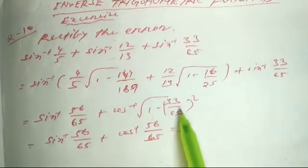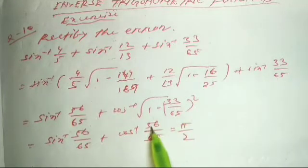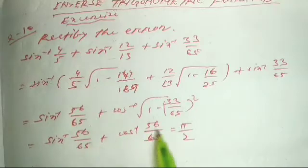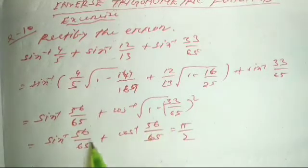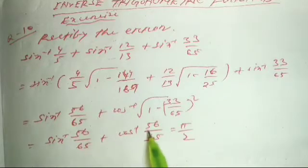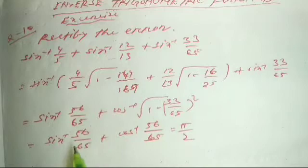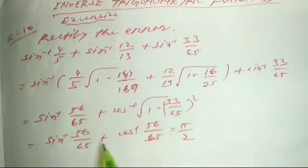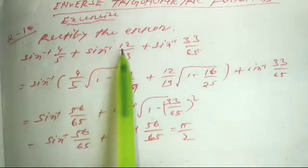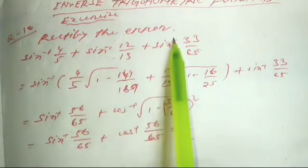It is sin⁻¹(56/65) plus, that is in color play, it is sin⁻¹(56/65). The formula: sin⁻¹x + cos⁻¹x = π/2. So sin⁻¹(56/65) + cos⁻¹(56/65) equals to π/2 — apply this formula. I think this formula applied in the question is a different calculation.